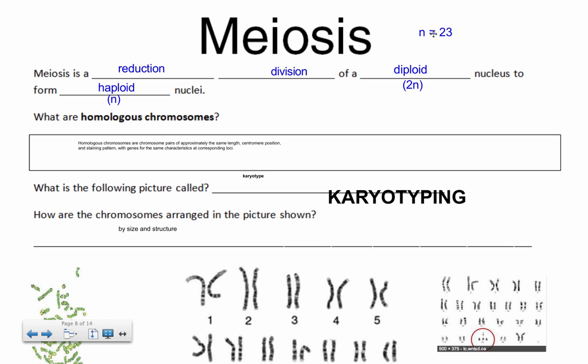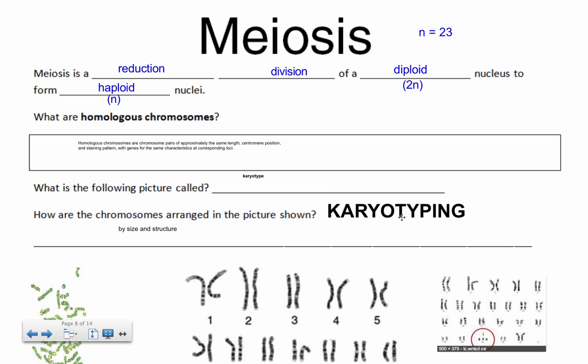Karyotyping is very useful - it allows you to find out if there are any kinds of chromosomal abnormalities, and hence any kinds of diseases that might have been inherited, some diseases that are caused by problems inside chromosomes.